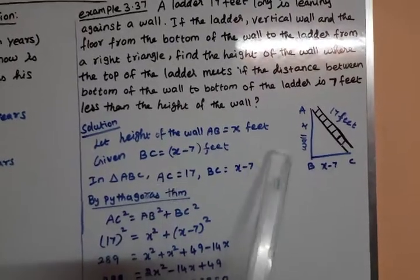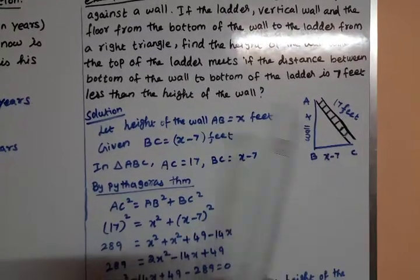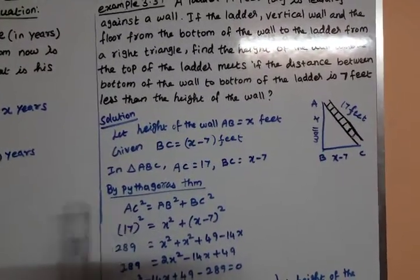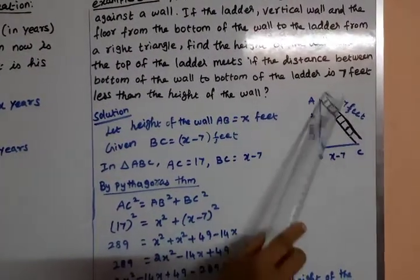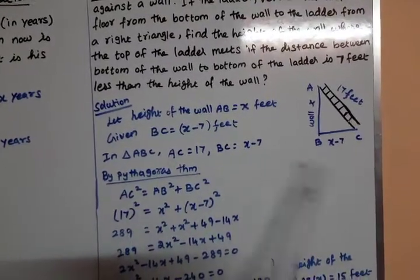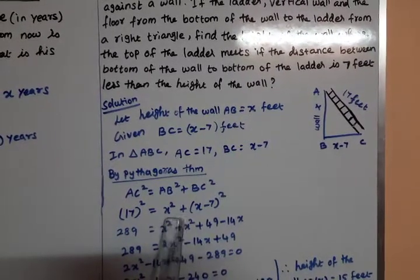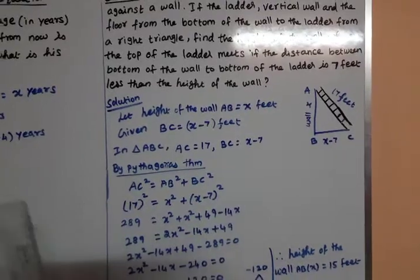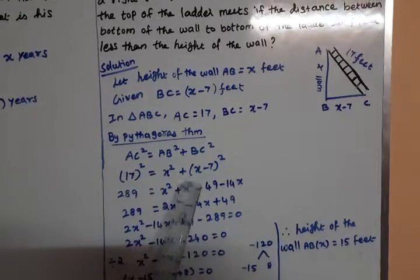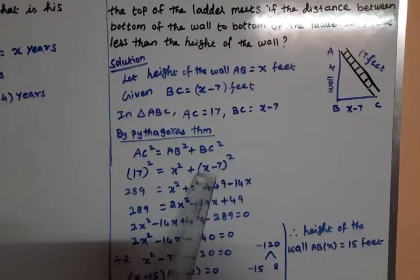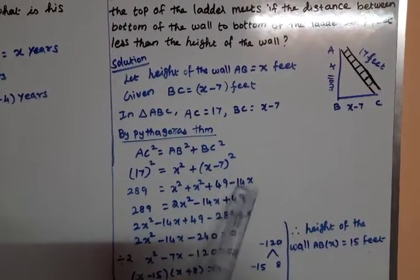We have right triangle ABC where AC equals 17, AB equals X, and BC equals X minus 7. Applying the Pythagorean theorem: AC squared equals AB squared plus BC squared. So 17 squared equals X squared plus (X minus 7) whole squared. That is 289 equals X squared plus X squared minus 14X plus 49.